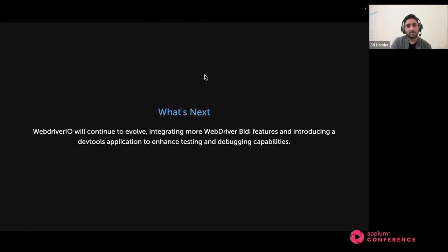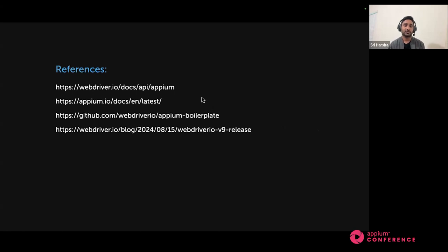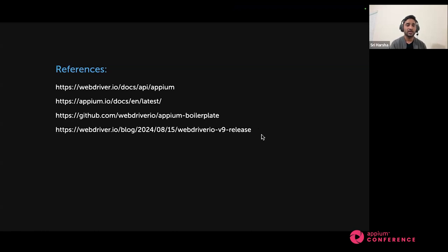So this is all about jumpstarting your journey with WebdriverIO and Appium. With WebdriverIO and Appium together, you can start testing your mobile apps easily — set up in minutes, reducing the complexity of the setup, and you can directly execute your test cases with minor configuration changes. Here are a few references: if you want to go through the Appium docs or WebdriverIO docs, I've also included a link to the Appium boilerplate that WebdriverIO maintains — you can clone that repository and get started easily. If you want detailed information on what WebdriverIO 9 has, there is a blog with the WebdriverIO 9 release notes you can check out.